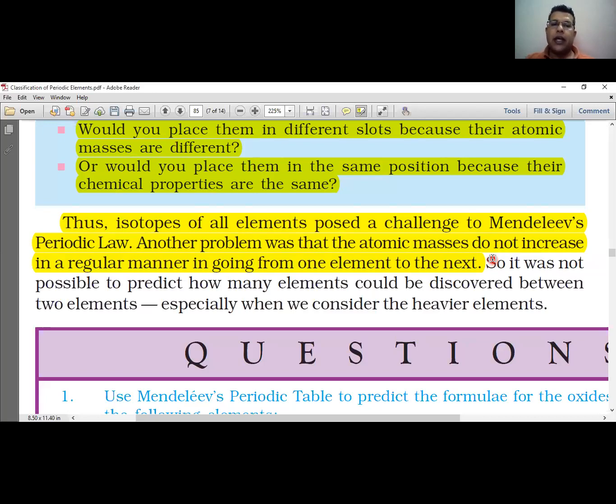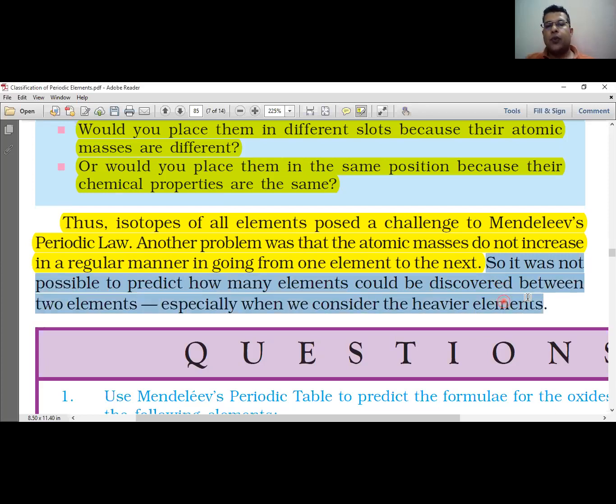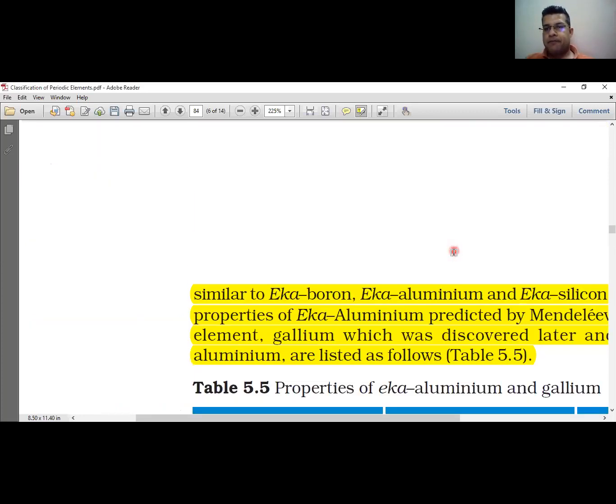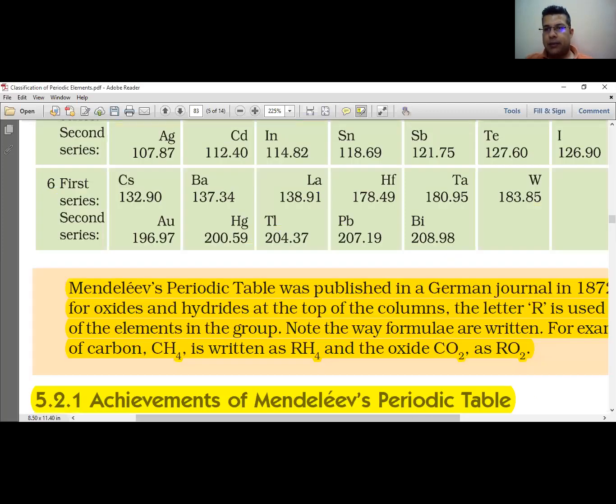It was not possible to predict how many elements could be discovered between two elements, especially when we consider the heavier elements.